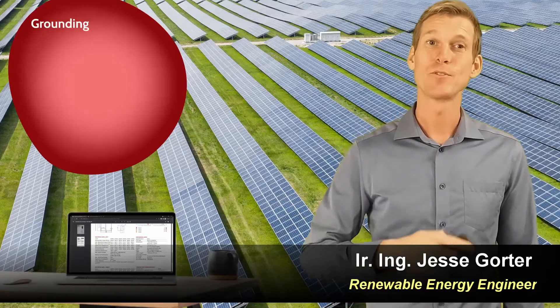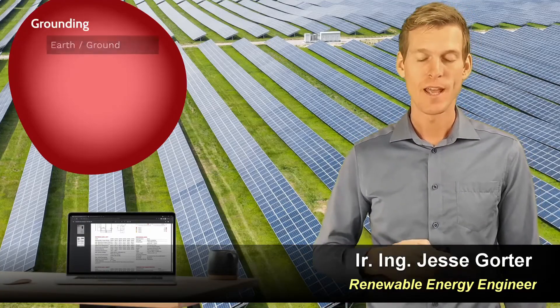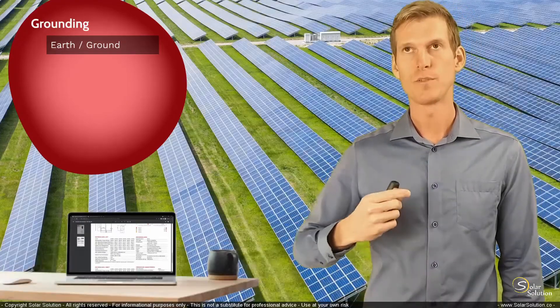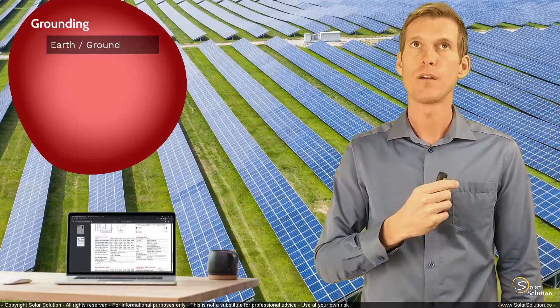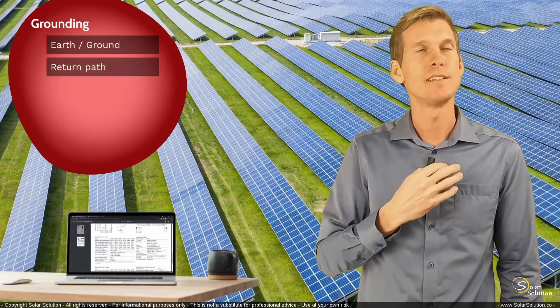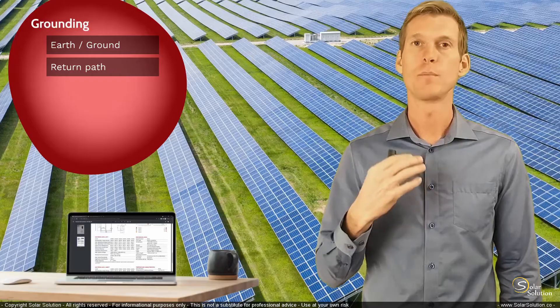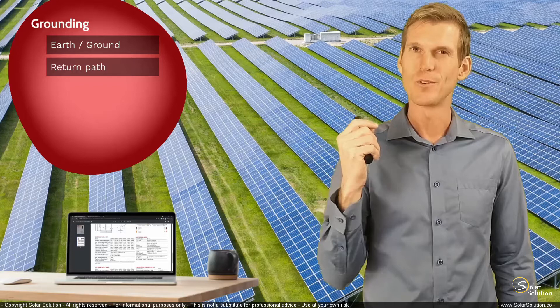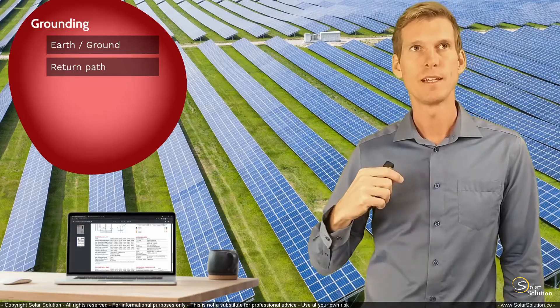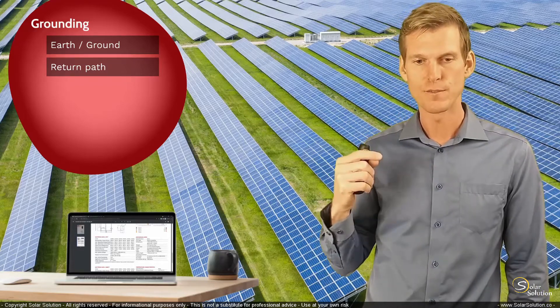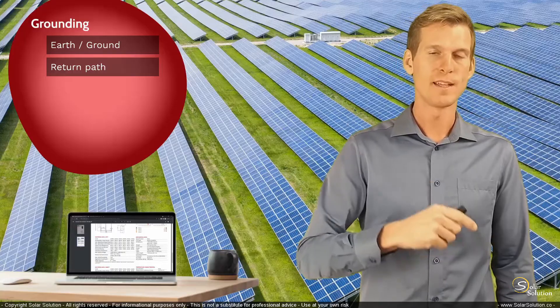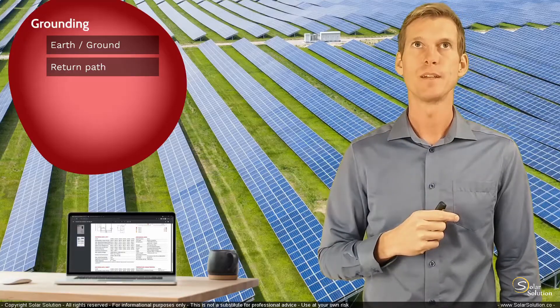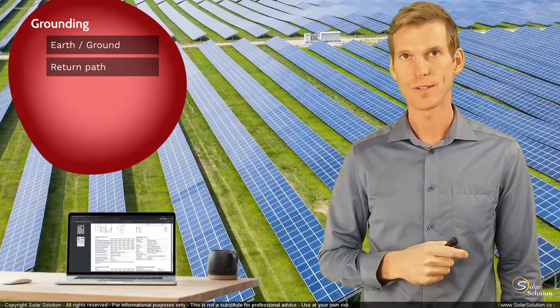Grounding is also referred to as earth or ground. If I put it in my own words, you are providing a return path. You're providing a return path in case of a compromised electrical circuit. So normally you have your standard electrical circuit, but if something goes wrong, then you want to provide a return path for the electricity to flow in such a way that you will not be in any danger of electrical shock.